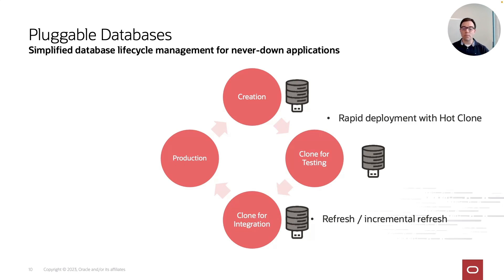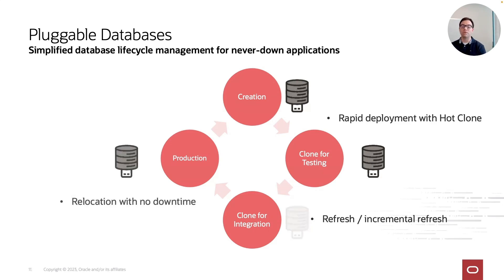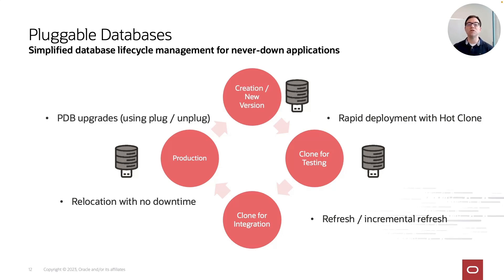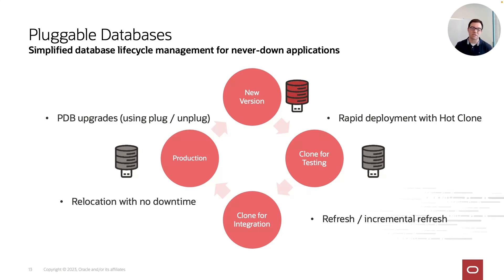Once testing is sufficient, you move your application into production — either by cloning or by relocation with no downtime, which some customers do: going from integration directly into production without downtime. Eventually the circle closes because an application or database upgrade is required. You can unplug and plug the pluggable database into a new container database of the higher version, and as you continue developing, the lifecycle repeats.